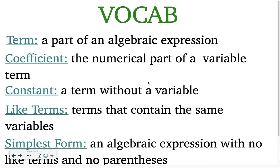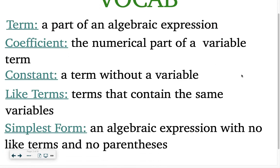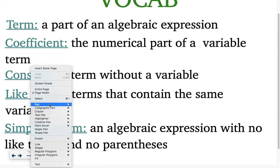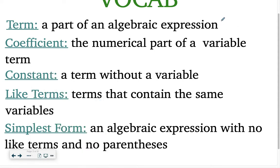So let's talk about some vocab. A term is a part of an algebraic expression. So a term could be something as simple as a number, like 3, or a term could be x, or a term could be 3x put together. But notice there's no adding or subtracting involved for a term.